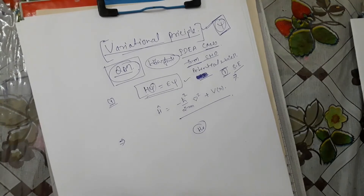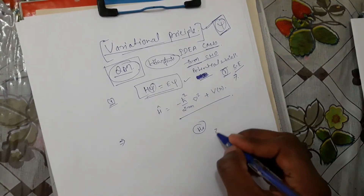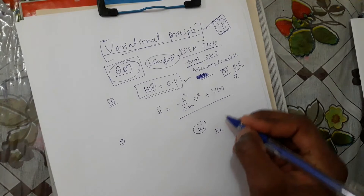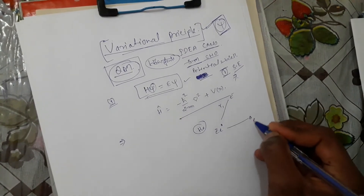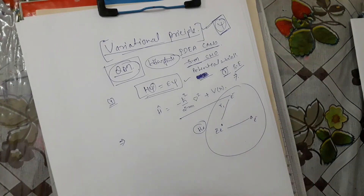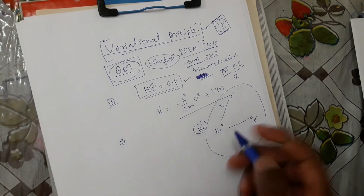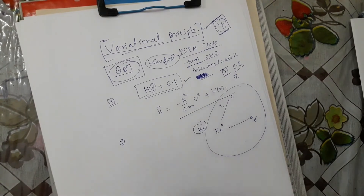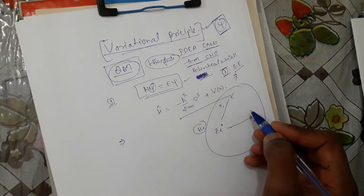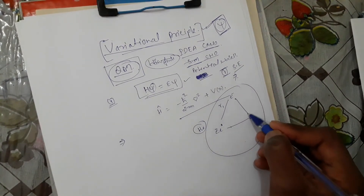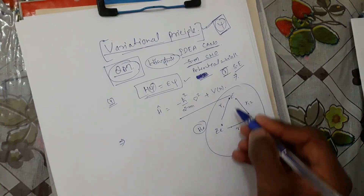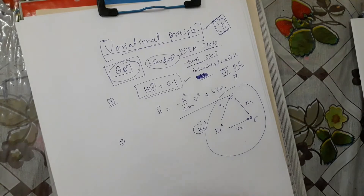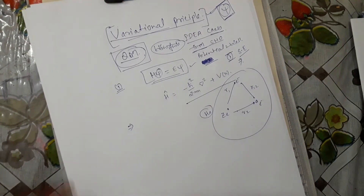Consider the helium atom, which has a Ze charge at the nucleus. From the nucleus, at distance R1 there is electron 1 (negative charge), and at distance R2 there is electron 2. So how can we calculate the wave function for the helium atom? These two electrons are at distances R1 and R2 from the nucleus, and R12 is the distance between the two electrons.